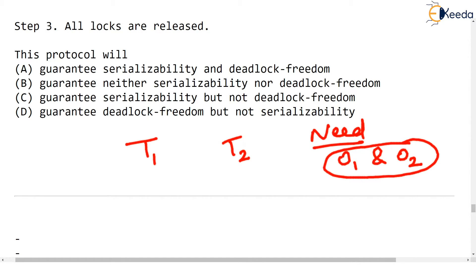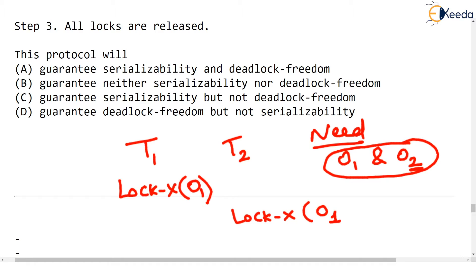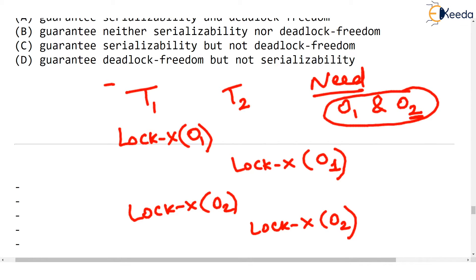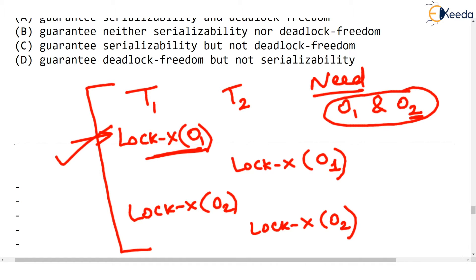Let us take only two objects — say K is 2 — so O1 and O2, and both transactions need O1 and O2 with exclusive locking. Which lock should T1 acquire first? It must be O1. Now suppose T2 tries to acquire a lock — which lock should T2 acquire? Again O1, because they must take objects in increasing order of addresses. T1 has locked O1 exclusively.